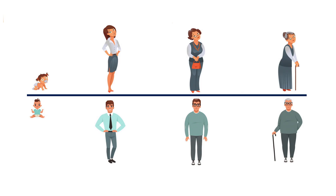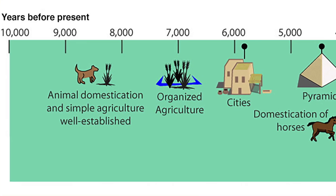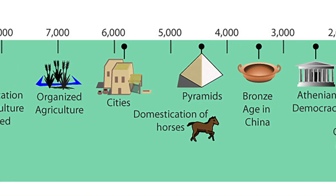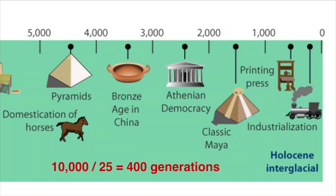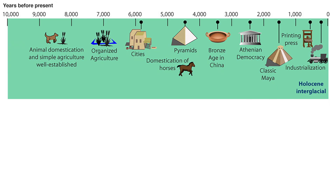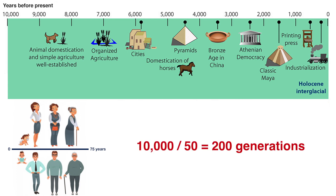The time frame of human existence, where a generation typically spans 25 years and a human life may last an average of three generations, is also small compared to the time span of human civilization. The number of human generations in the recognized time span of civilization is about 400. The ratio of the time span of civilization to the time span of an individual's life may be around 200.